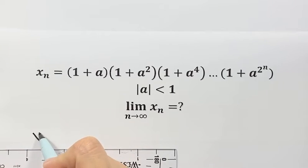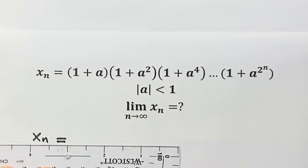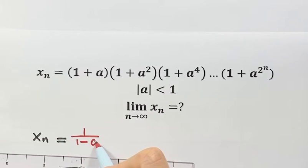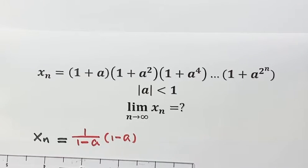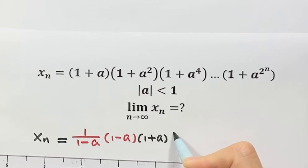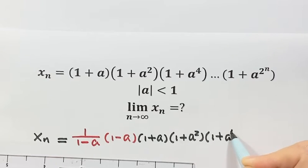First, we need to simplify the sequence x_n. We rewrite the sequence by multiplying by 1 over (1 minus a), then times (1 minus a). The (1 minus a) on the bottom and top cancel out, leaving just 1. So now we bring in the sequence: 1 plus a, then 1 plus a squared, then 1 plus a to the fourth, until the last term.